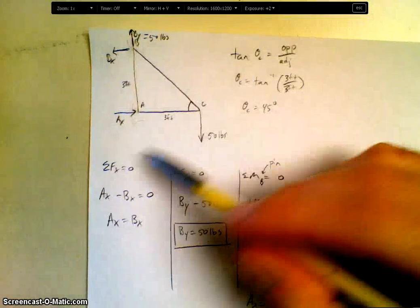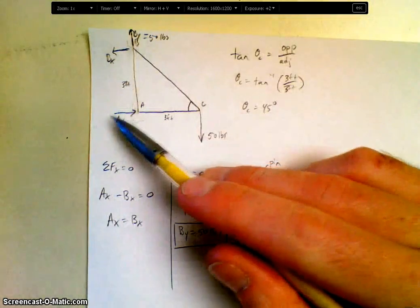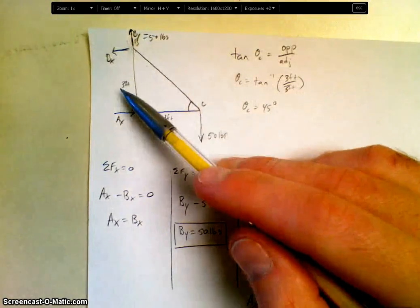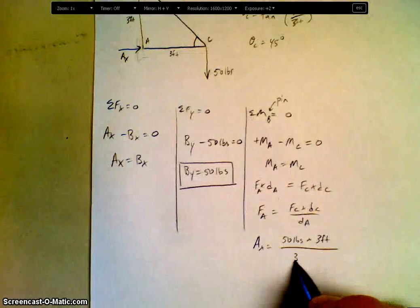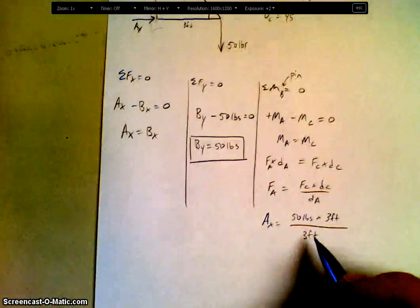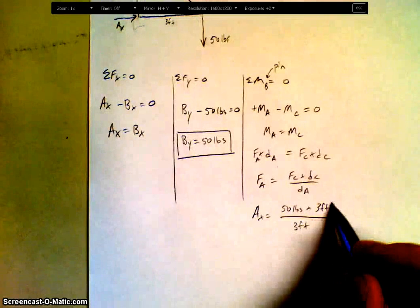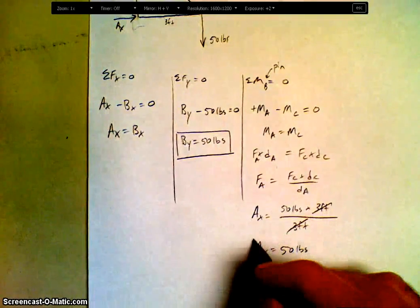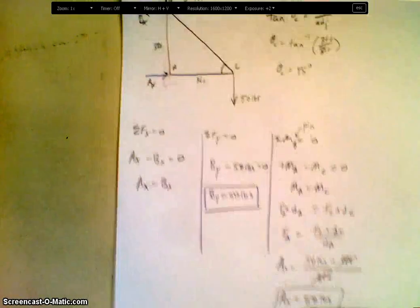Distance to A. Again, what kind of force is at A? Horizontal force. So I'm looking for the perpendicular distance, which would be 3 feet. Let's cancel. So AX equals 50 pounds. What does it tell us that it's positive? It confirms our direction.